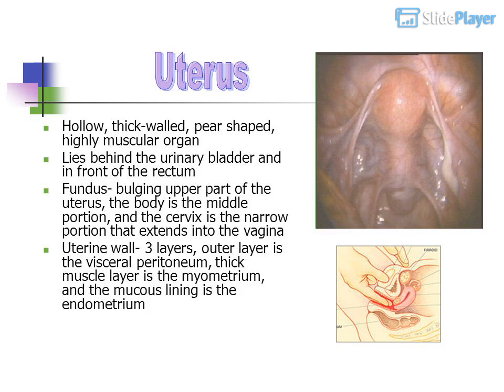The uterus is a hollow, thick-walled, pear-shaped, highly muscular organ. It lies behind the urinary bladder and in front of the rectum. The fundus is the bulging upper part of the uterus. The body is the middle portion, and the cervix is the narrow portion that extends into the vagina.